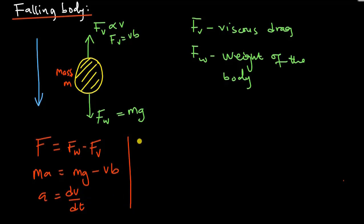And so I have M times dv/dt equals Mg minus Vb. I can reorganize this to form a better differential equation. That's going to be M dv/dt plus Vb equals Mg.